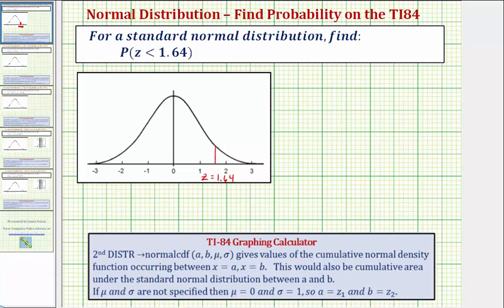Therefore the probability that z is less than 1.64 would be the same as the area under the standard normal distribution curve shown here to the left of z equals 1.64, which should be this area here. To find this area and the probability that z is less than 1.64...